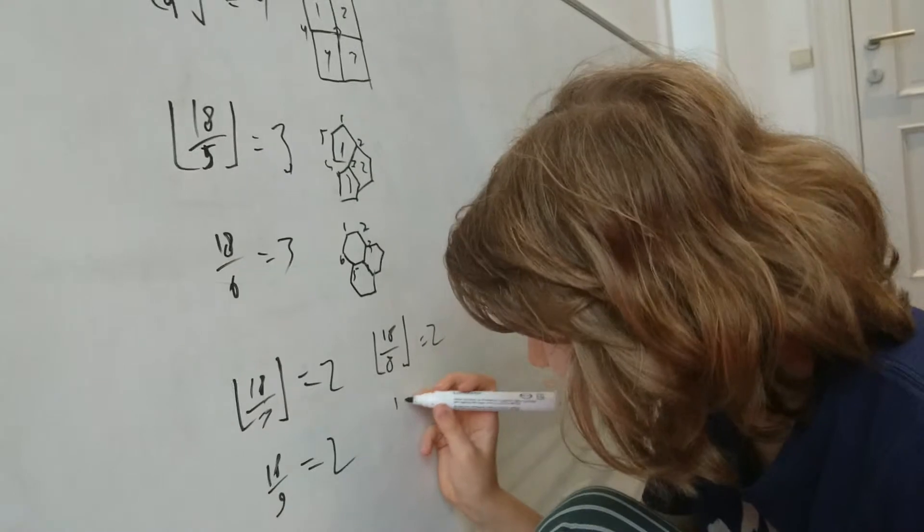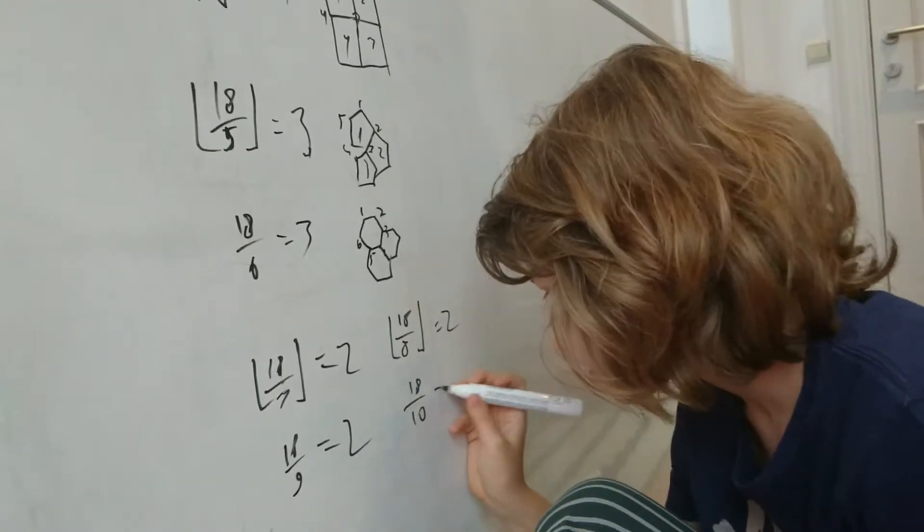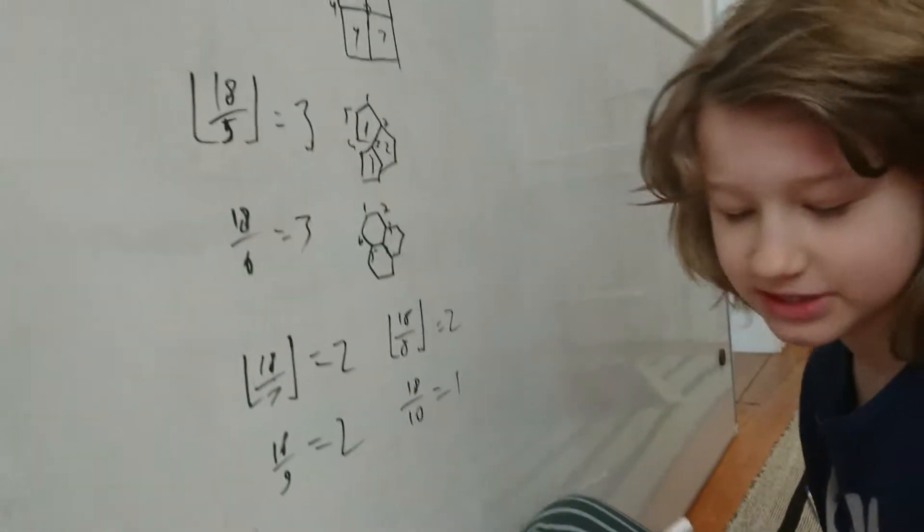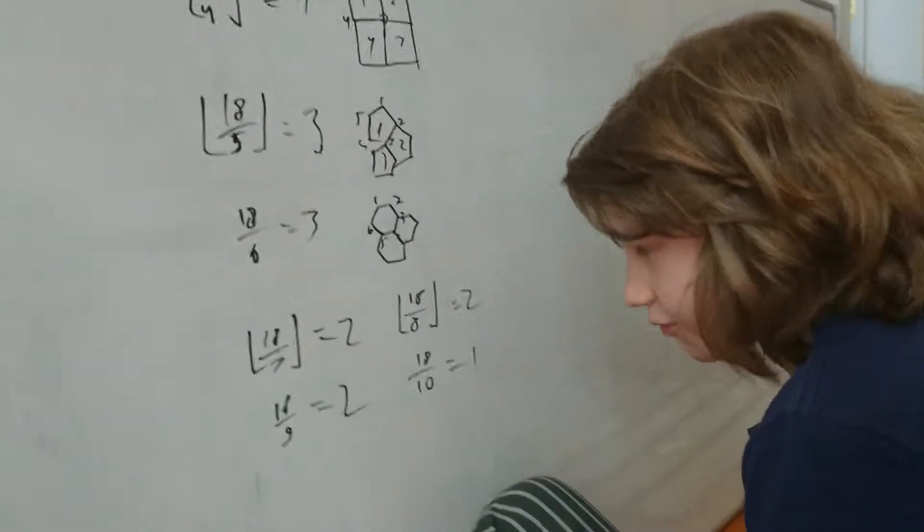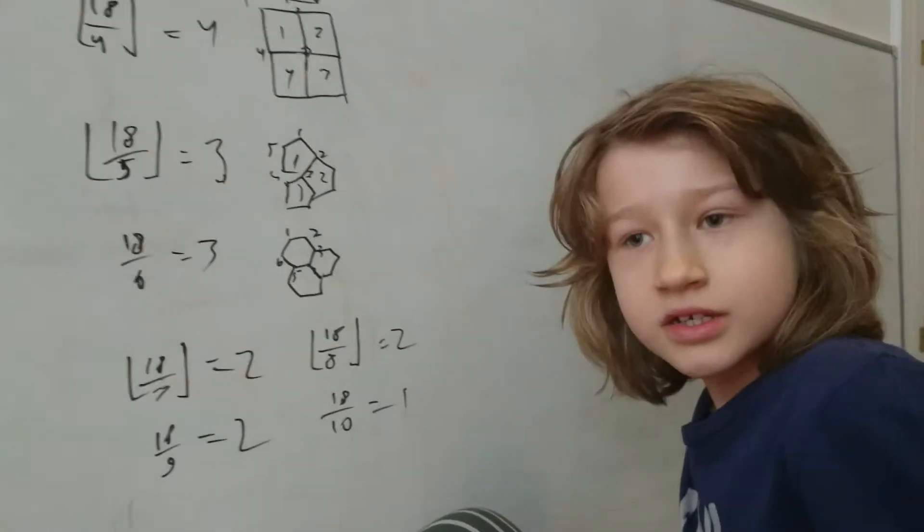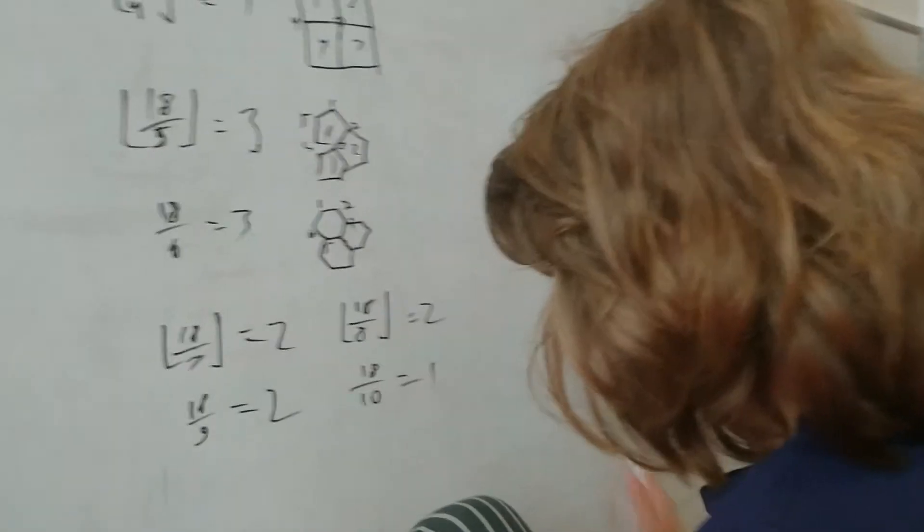18 divided by 9 is also equal to 2. Only at 10 is it going to fail. It's 1 but 2 decagons can fit around a point, of course. So only here it fails.